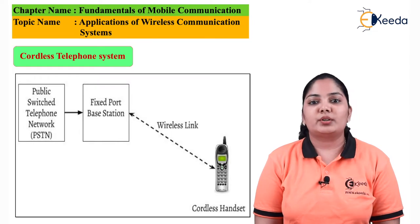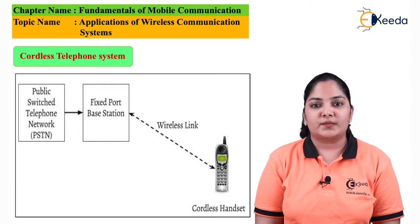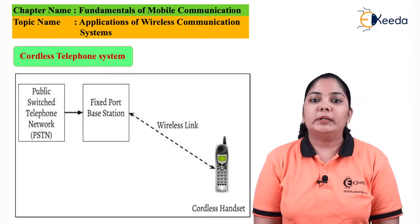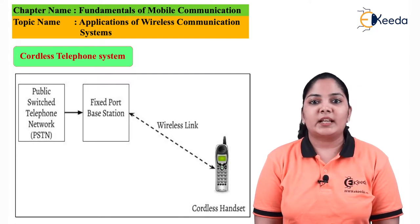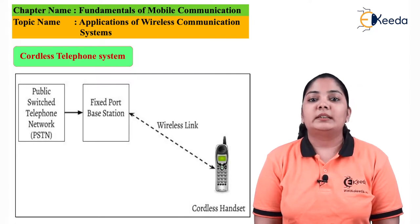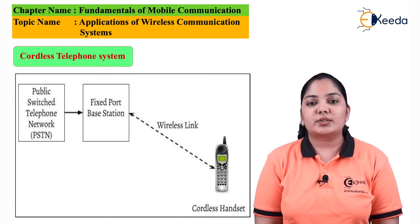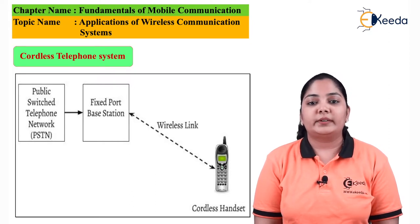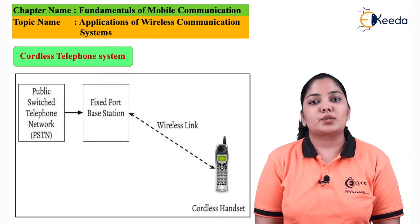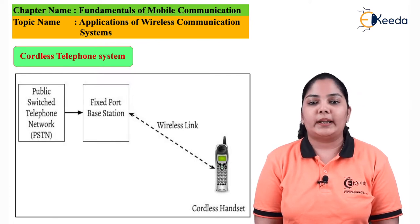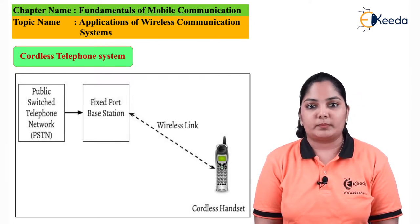The first generation of the cordless phones were used to a limited range of few meters. In the second generation, the distance of this cordless phone increased to couple of hundred meters. In the second generation, a provision was also provided to add a paging system.